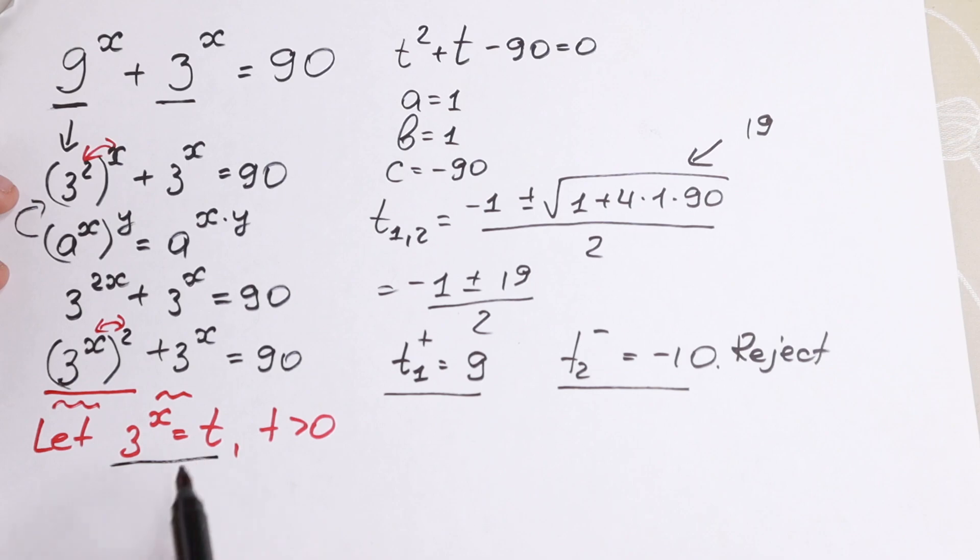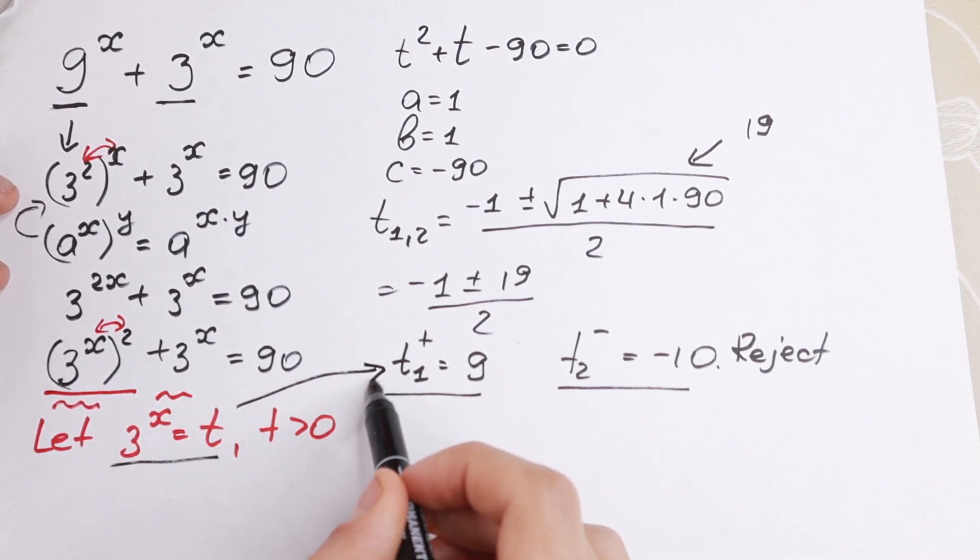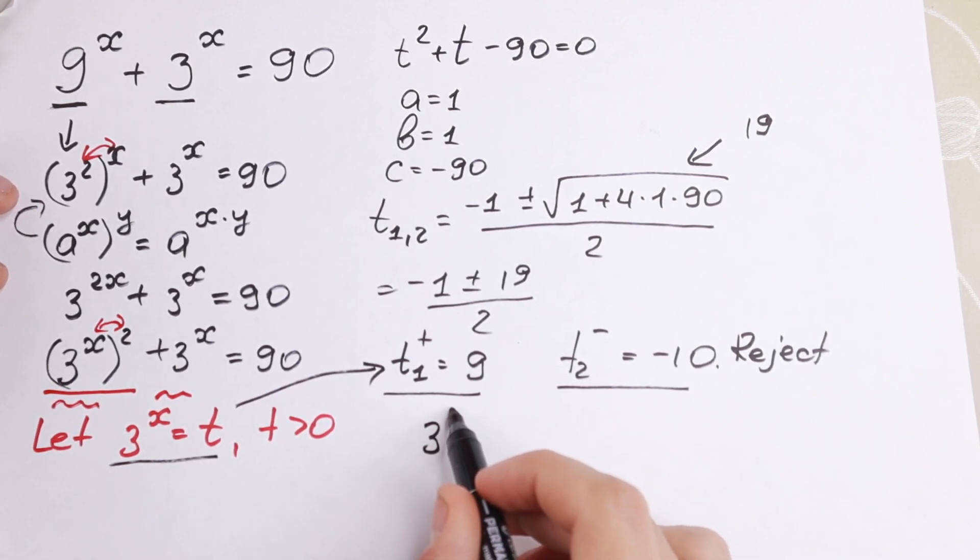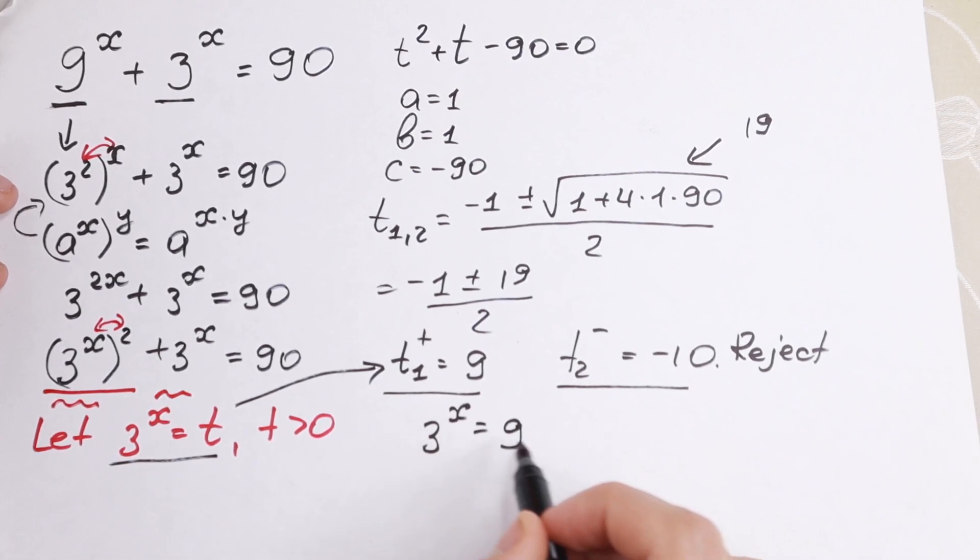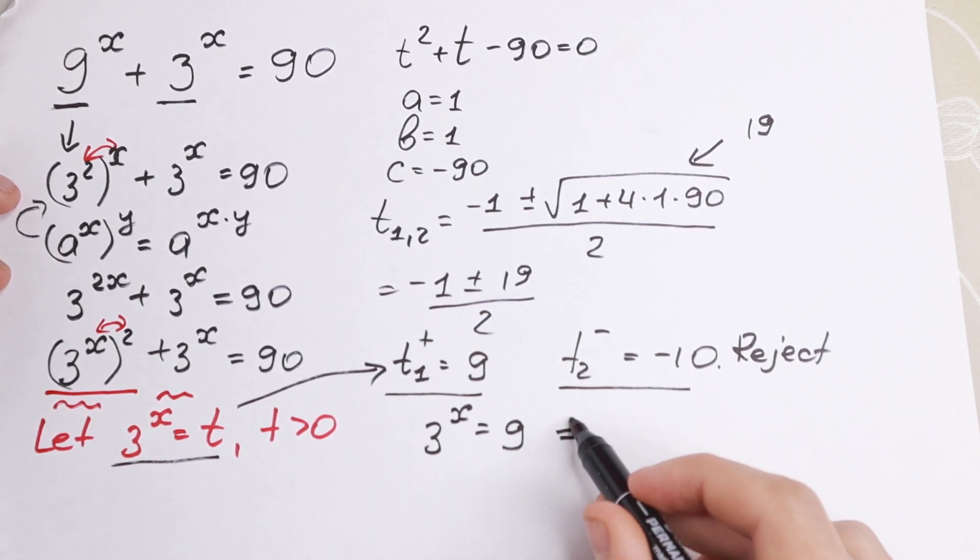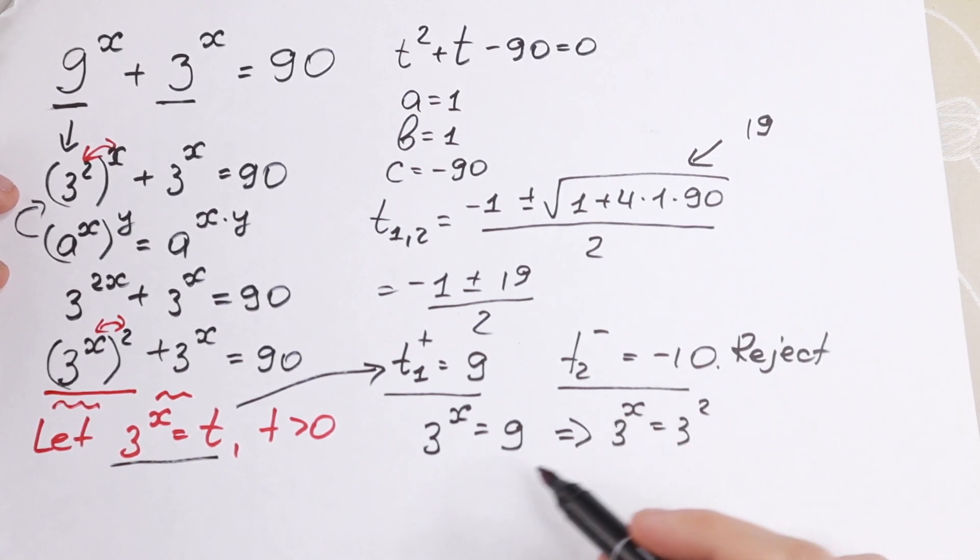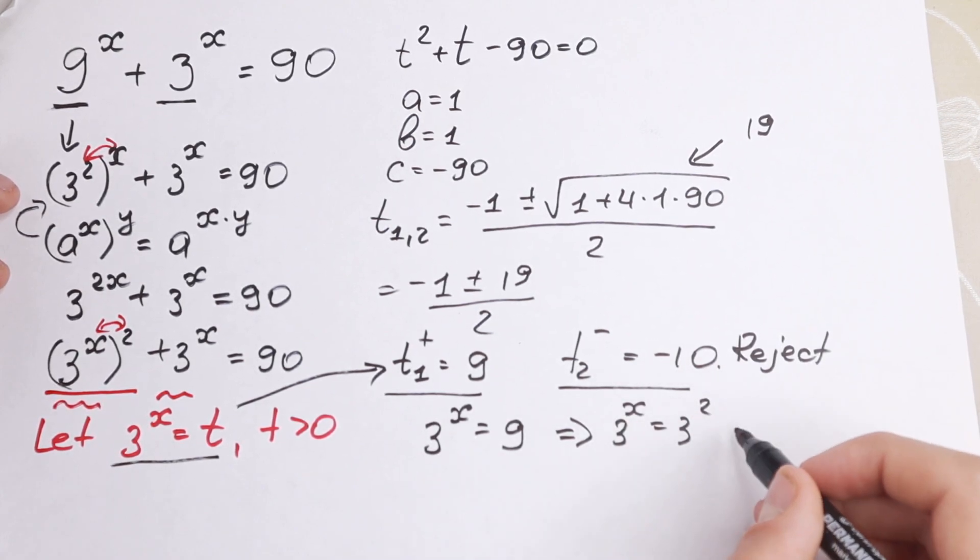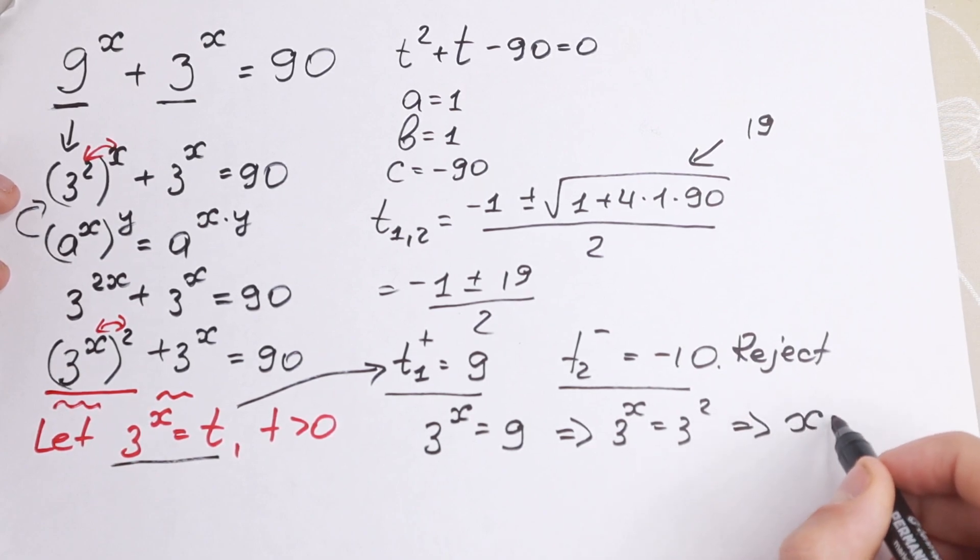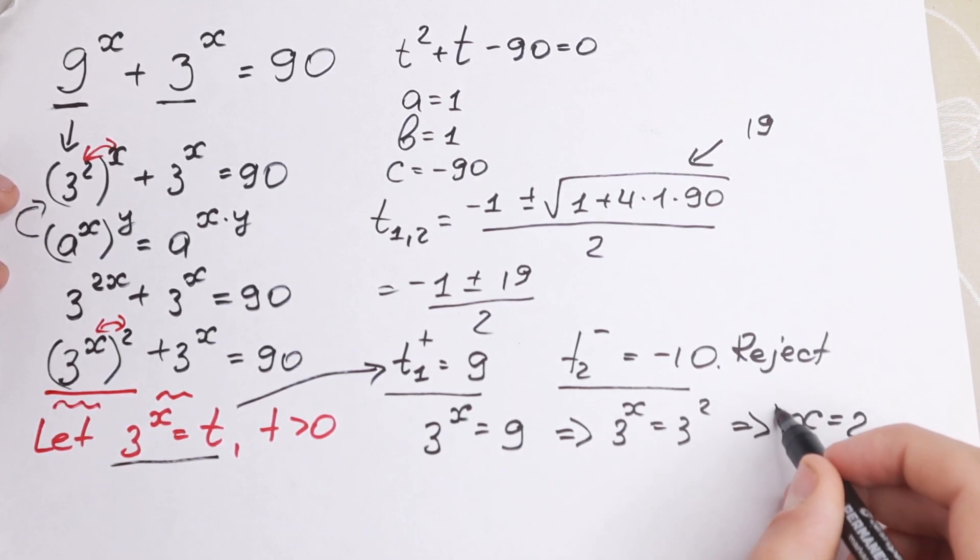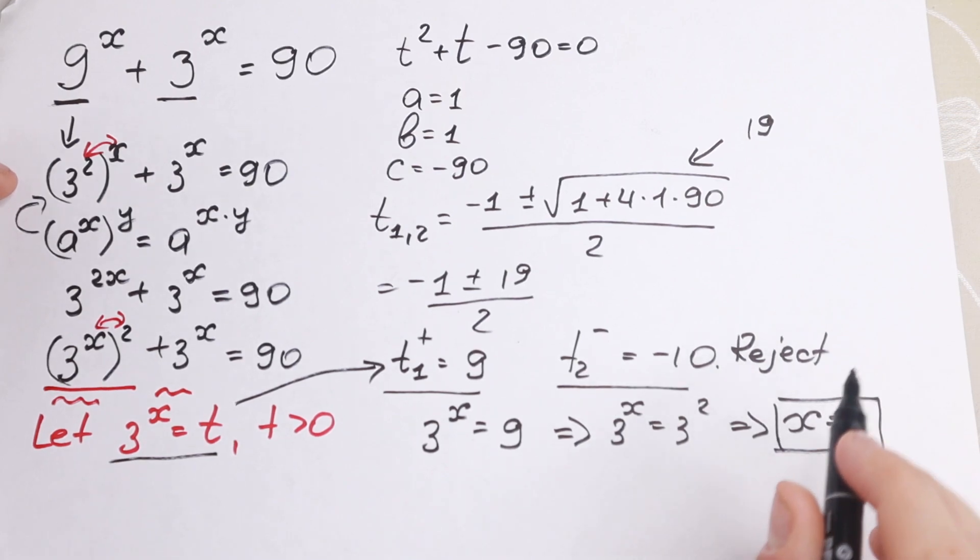So let's go to our substitution. We let that 3 to the power x equal to t, but t equal to 9. So we will have a really good equation. 3 to the power x equal to 9. And from here, as you can see, 3 to the power x equal to 3 square, which is a classic exponential equation. And from here, x equal to 2. And this is a solution to this equation.